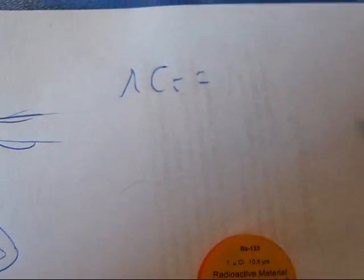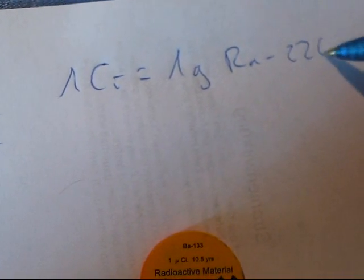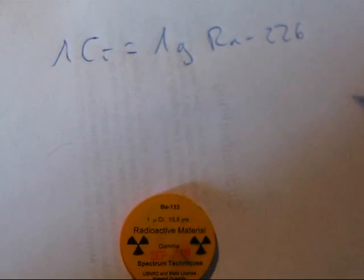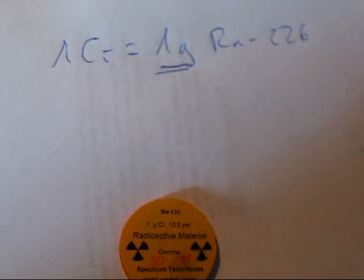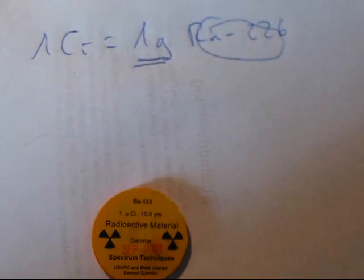That was back from the time where having one gram of radioactive material wasn't so uncommon. And it was named after Pierre and Marie Curie, who discovered radium-226.